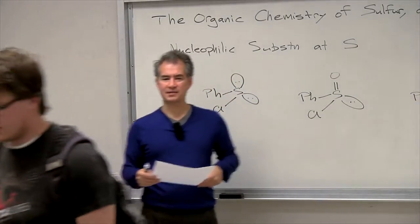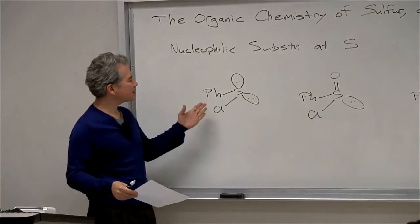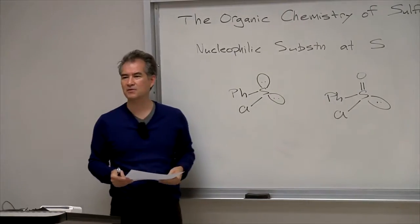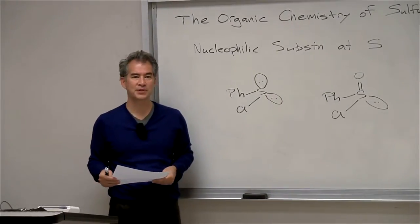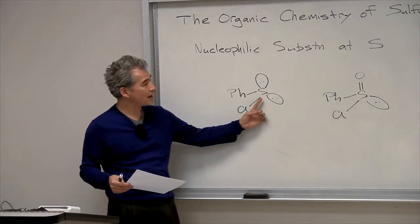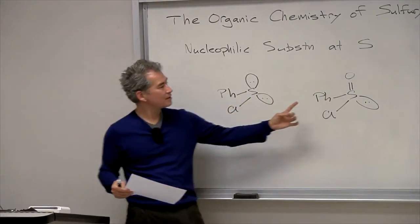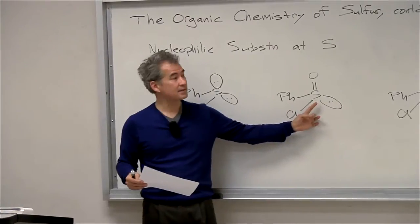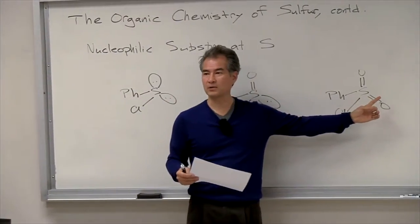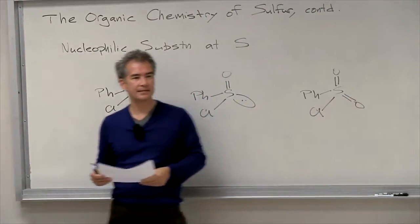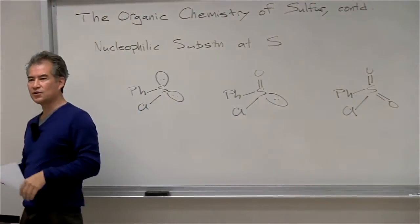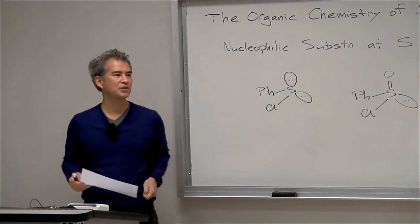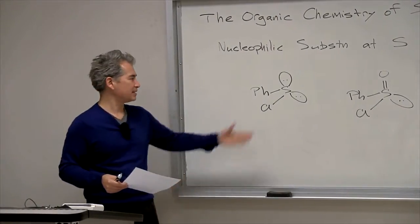Now let's talk about substitution processes of sulfur. I want to compare these three classes of sulfur functional groups: sulfenyl chlorides, sulfinyl chlorides, and sulfonyl chlorides. And there's a huge difference in rates in terms of the rate at which you substitute these.